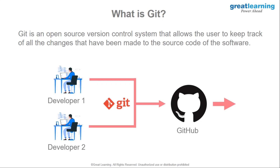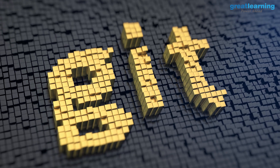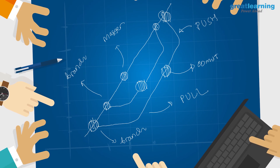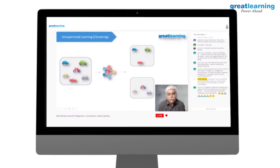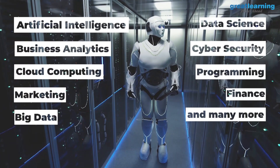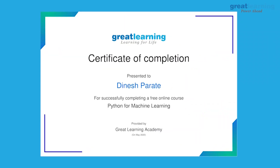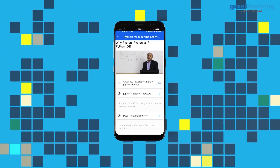Overall, Git is one of the best source code management tools available. It can be used by software developers, data scientists, students, professors, academic researchers, or hobbyists — it's easy to learn and use. You can even use it just for storing files. That was our video on what Git is and its features. If you're interested, visit greatlearning.in/academy for more than 80 free courses and a free certificate. Thank you for watching.